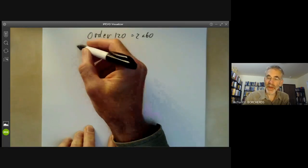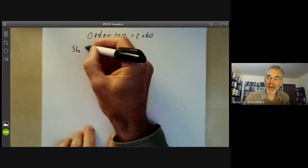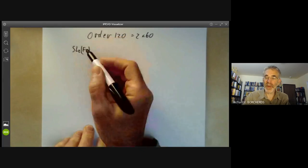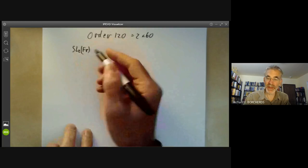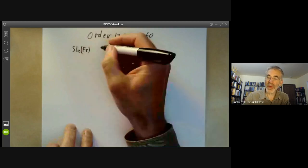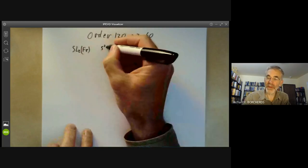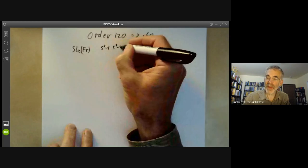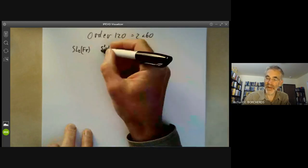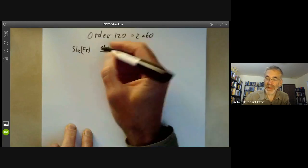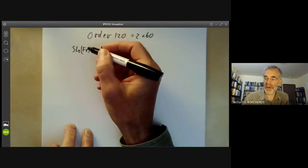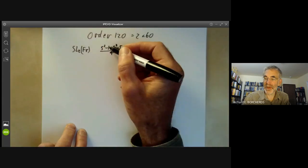We can take the group SL2 of F5, 2 by 2 matrices of determinant 1 over the field with five elements. So the number of elements of this is 5 squared minus 1 times 5 squared minus 5. That's the order of GL2F5 and then we have to divide it by 4 because we're taking numbers of determinant 1. So this ends up as 120.